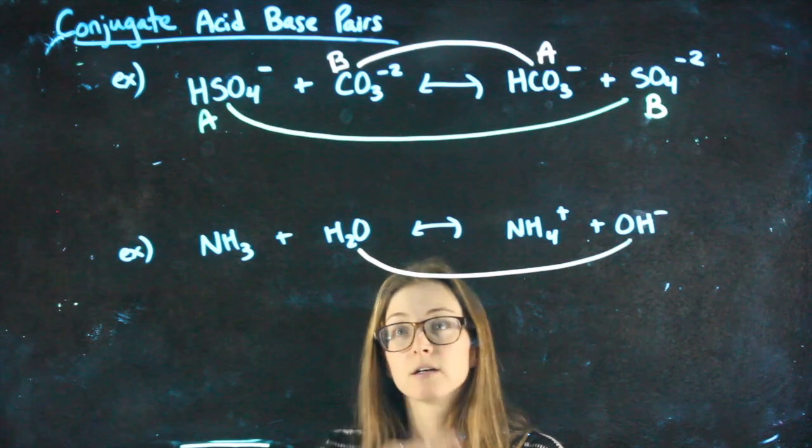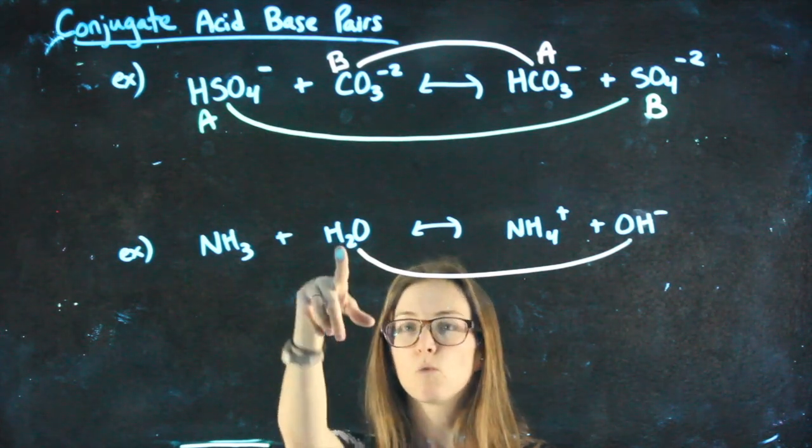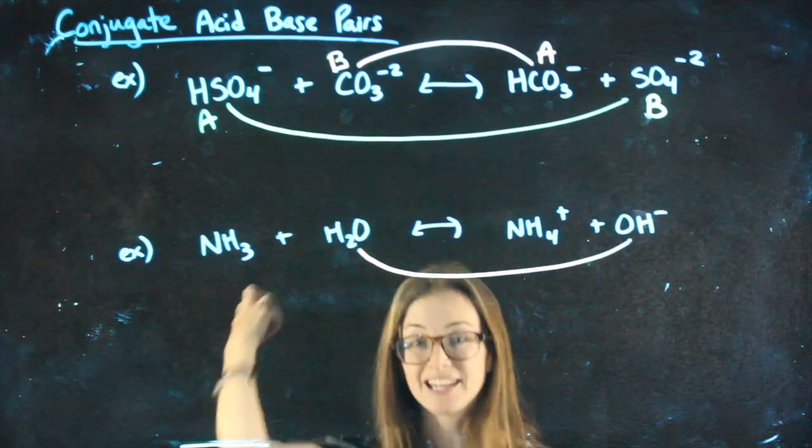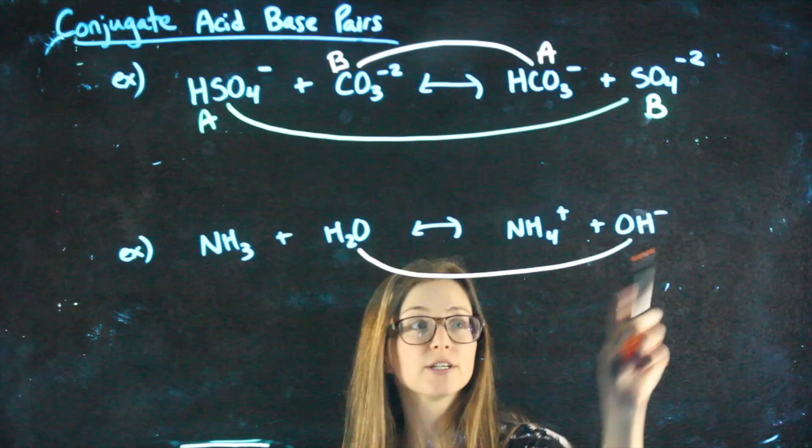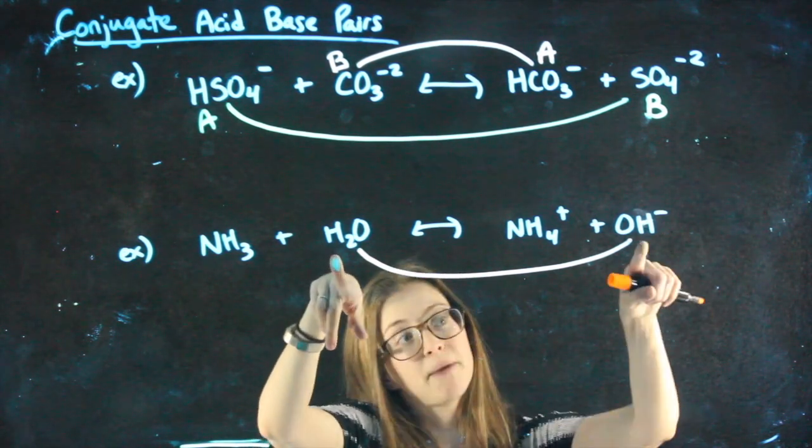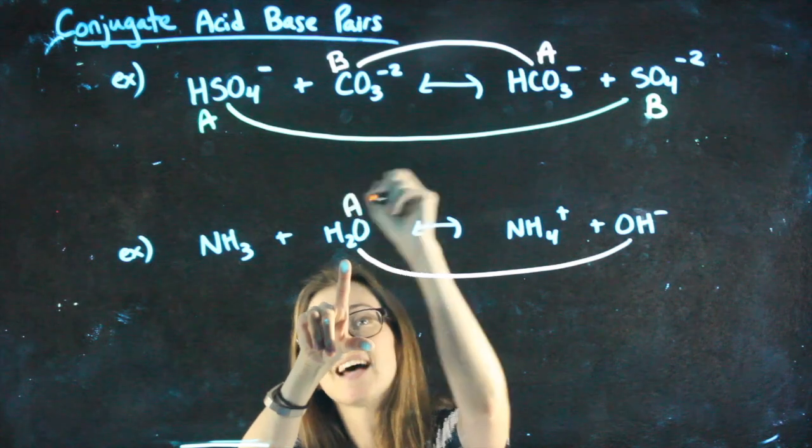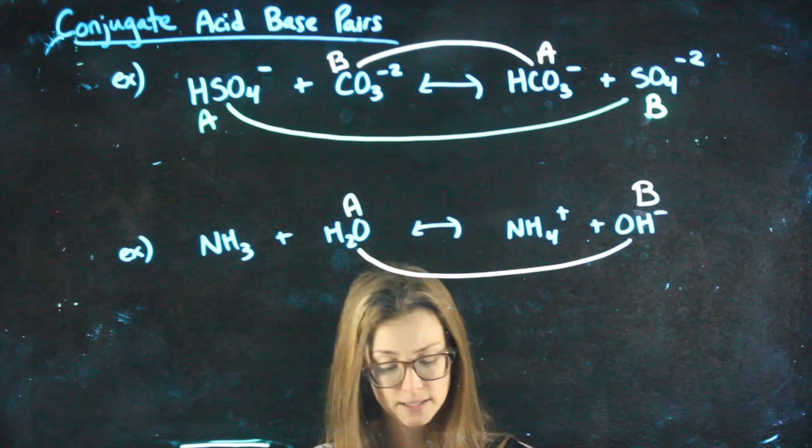Water's conjugate would be something with one more or less H+. Water is HOH. If I take an H off of that, I have OH-. So this actually is an acid-base pair. The water has the extra H comparatively, so in this case, it's acting as an acid. And OH-, not surprisingly, is acting as my base.